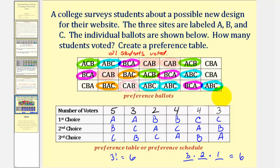Now to make sure we didn't miss any, let's go ahead and find this sum to make sure it equals 21. So we have five plus three plus two, that's 10, plus four, plus three, plus four, which is 21. So again, these are the preference ballots, and this is the preference table.